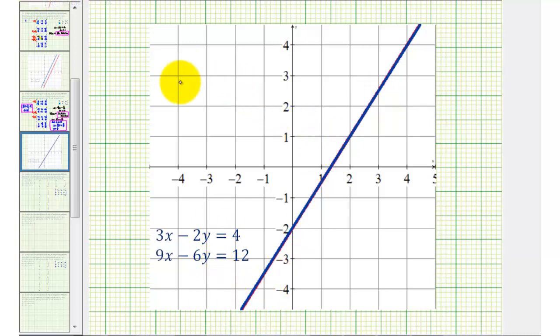Any point on these two lines would be in the form 2/3t + 4/3, comma t, again, where t is any real number. I hope you found this explanation helpful.